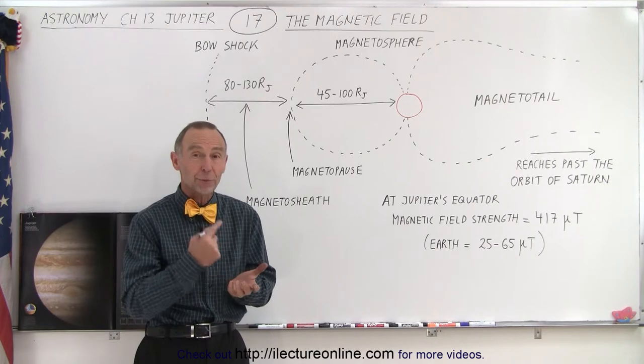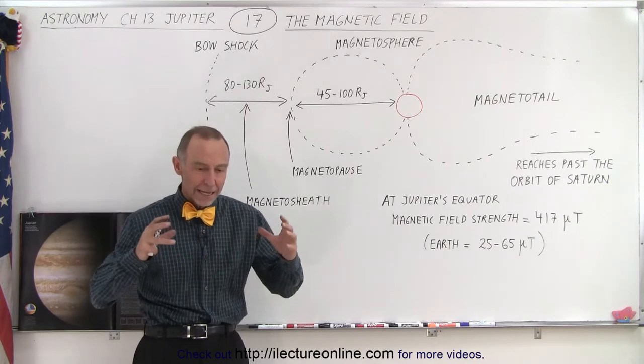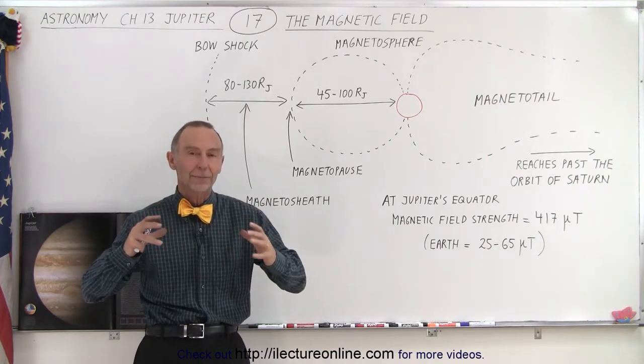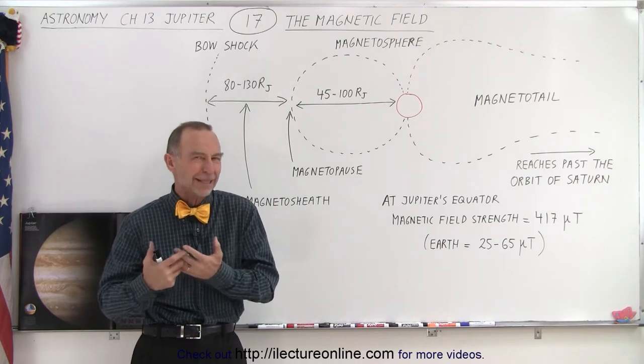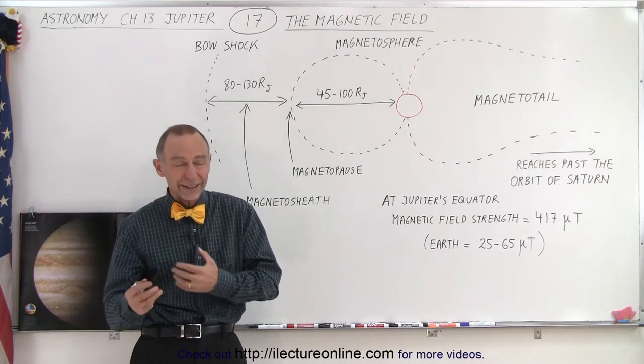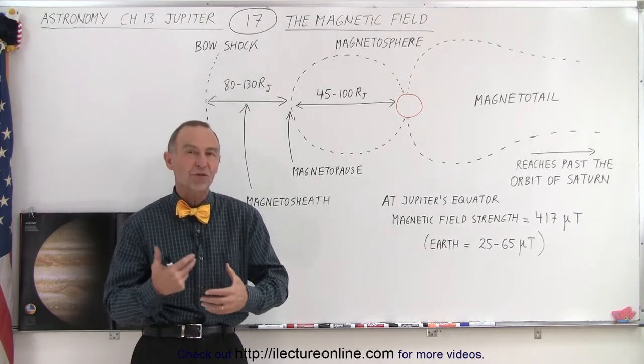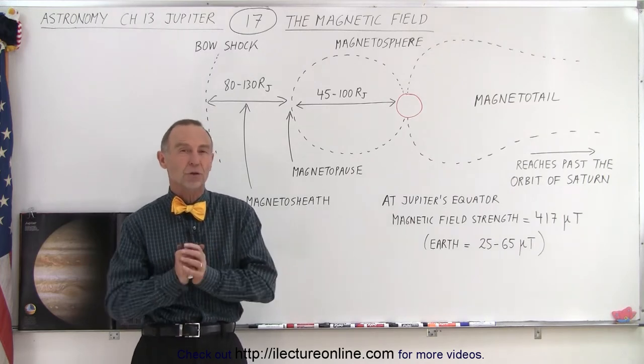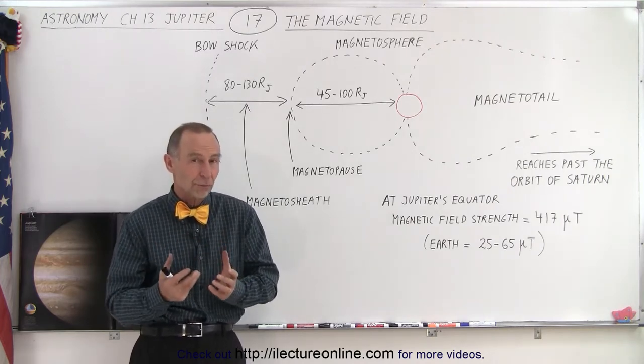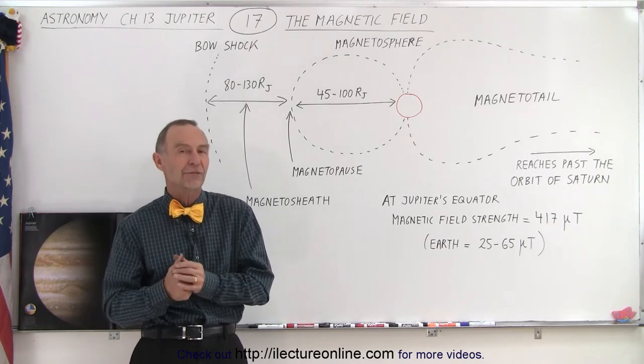Jupiter, because of its rapid rotational motion and the vast majority of the planet being hydrogen in liquid and metallic state, that combination produces an enormous dynamo effect that produces tremendous current. Those tremendous currents develop a tremendous magnetic field.